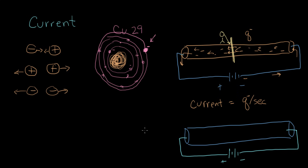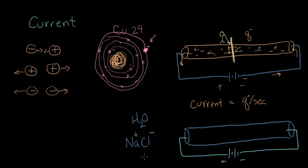Water is H₂O, and pure water does not conduct — there are no free electrons available. But I'm going to put some table salt in it. Table salt is ordinary salt made of sodium (Na) and chloride (Cl) — sodium chloride. If we sprinkle some table salt into water, these dissolve, and we get a net positive charge on the sodium and a net negative charge on the chlorine. So floating around out here are Na⁺ ions and Cl⁻ ions nearby.